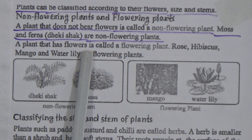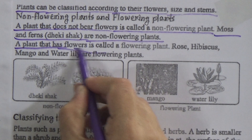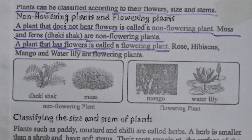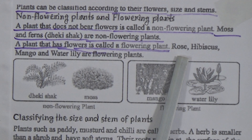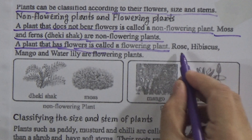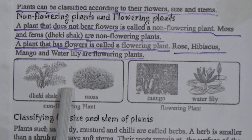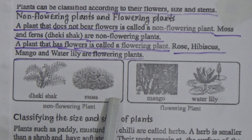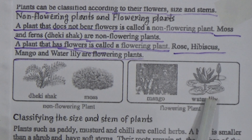Moss and ferns - that means dheki shak - are non-flowering plants. A plant that has flowers is called a flowering plant. Underline this and memorize it - it is a question-answer. Rose, hibiscus, mango and water lily are flowering plants. See this figure: dheki shak and moss are non-flowering plants. Mango and water lily are flowering plants.